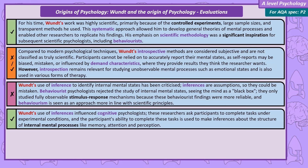Despite its weaknesses, the use of inferences has been influential, especially to cognitive psychologists. These psychologists also research internal mental states, but rather than ask participants what's happening in their minds, they ask participants to complete tasks under experimental conditions. The participants' ability to complete these tasks are used to make inferences about the structure of mental processes like memory, attention, and perception.